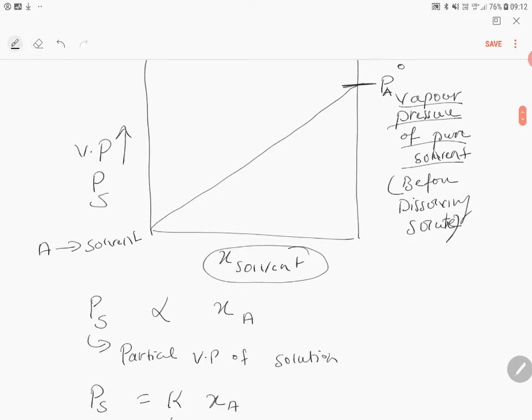You are getting the equation of a straight line passing through the origin. That is the reason this represents an equation of a straight line passing through origin. What is the value of the slope? Slope equals P°A.